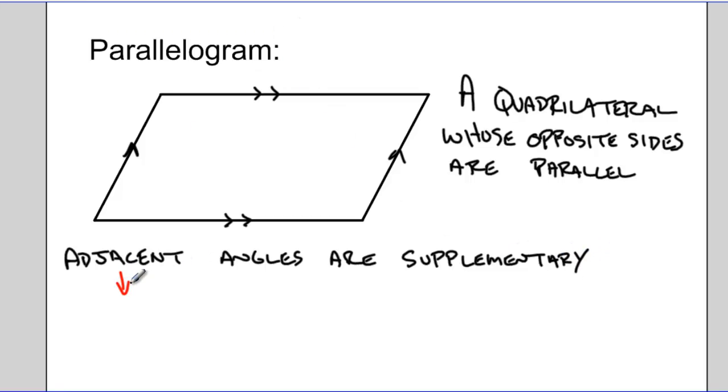So adjacent is a fancy way of saying beside each other. So angles that are beside each other are supplementary. Supplementary means that they add to 180 degrees. So if I have an angle X and an angle Y, and I add them together, they have to be equal to 180 degrees.